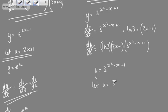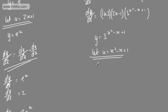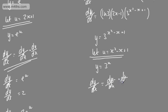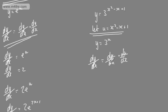So u is going to be equal to x squared minus x plus 1. We have y is equal to 3 to the u. We can say that dy by dx is equal to dy by du multiplied by du by dx. So this is the formal approach. Let's consider dy by du: if we differentiate 3 to the u, we're going to get 3 to the u multiplied by the natural log of 3.